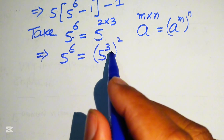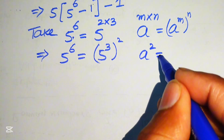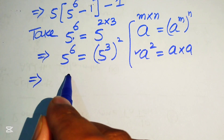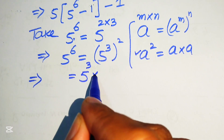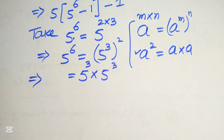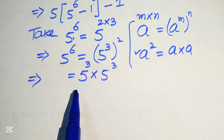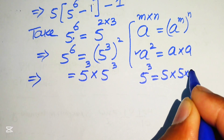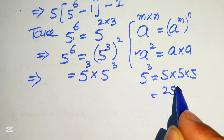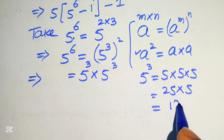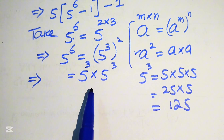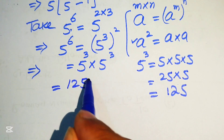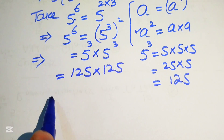Since a squared equals a times a, we break 5 to the power of 3 squared as 5 to the power of 3 multiplied by 5 to the power of 3. Now, 5 to the power of 3 means 5 multiplied by 5 by 5: 5 fives are 25, multiplied by 5 gives 125. So 5 to the power of 3 equals 125, and we replace it here as 125 multiplied by 125.